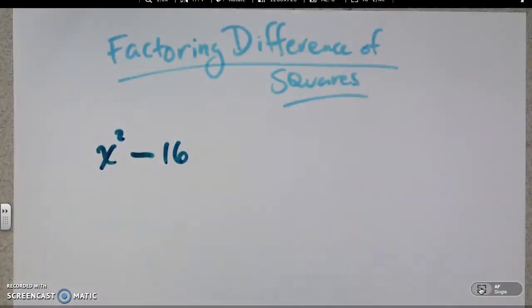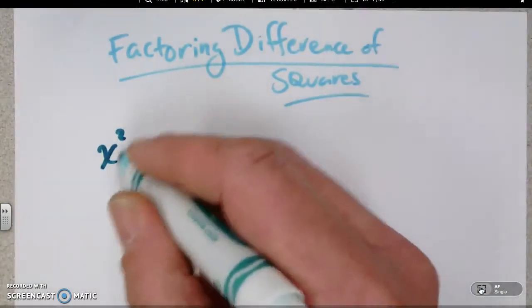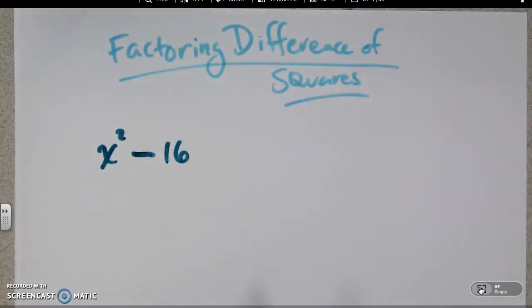Okay, now to factor this, here's the technique we're going to use. What's weird is there's no middle term. That's okay. We'll show you why that actually makes this easier.